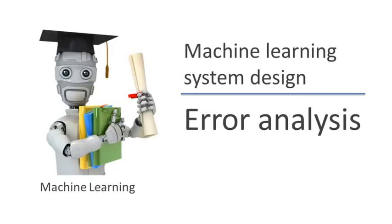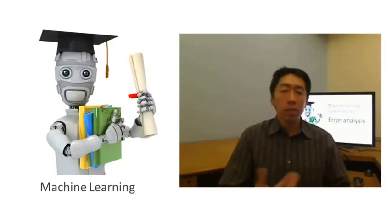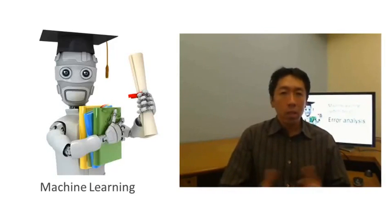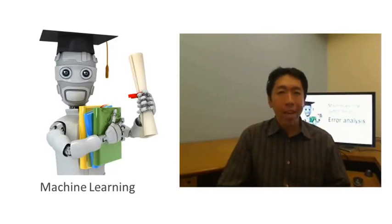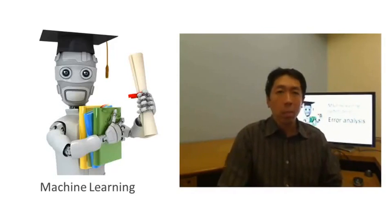In the last video, I talked about how when faced with a machine learning problem, there are often lots of different ideas for how to improve the algorithm. In this video, I'd like to talk about the concepts of error analysis, which will hopefully give you a way to more systematically make some of these decisions.